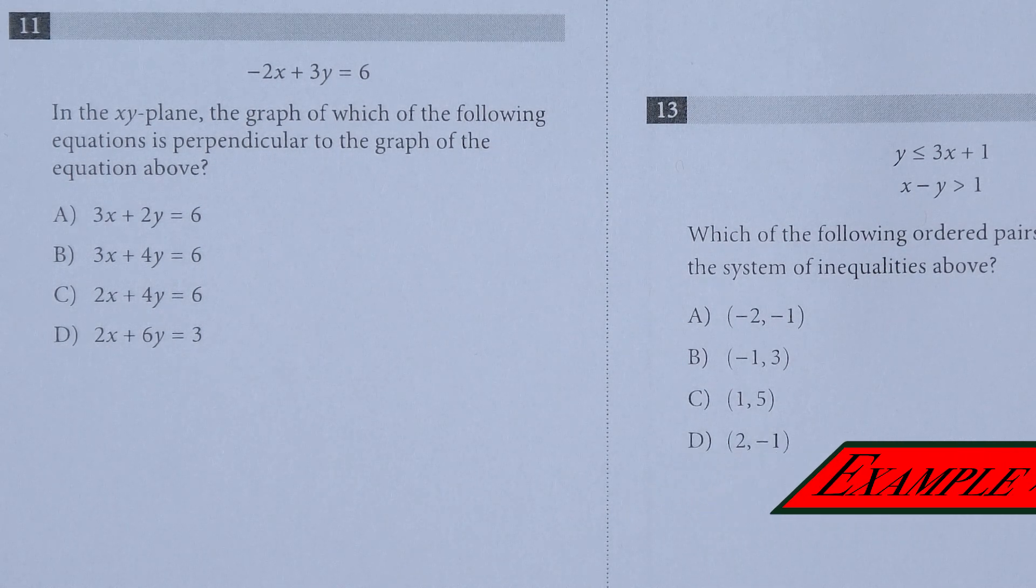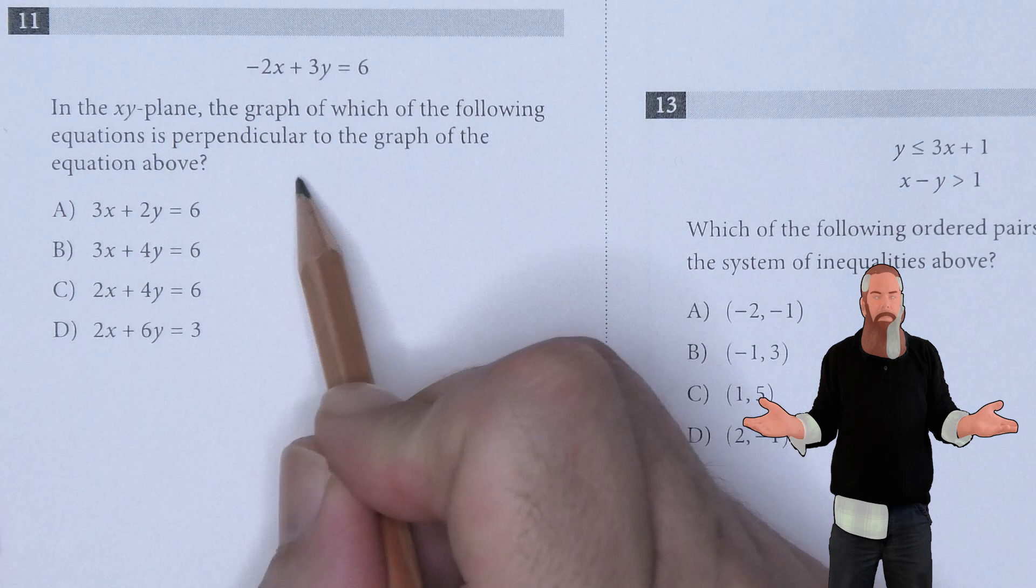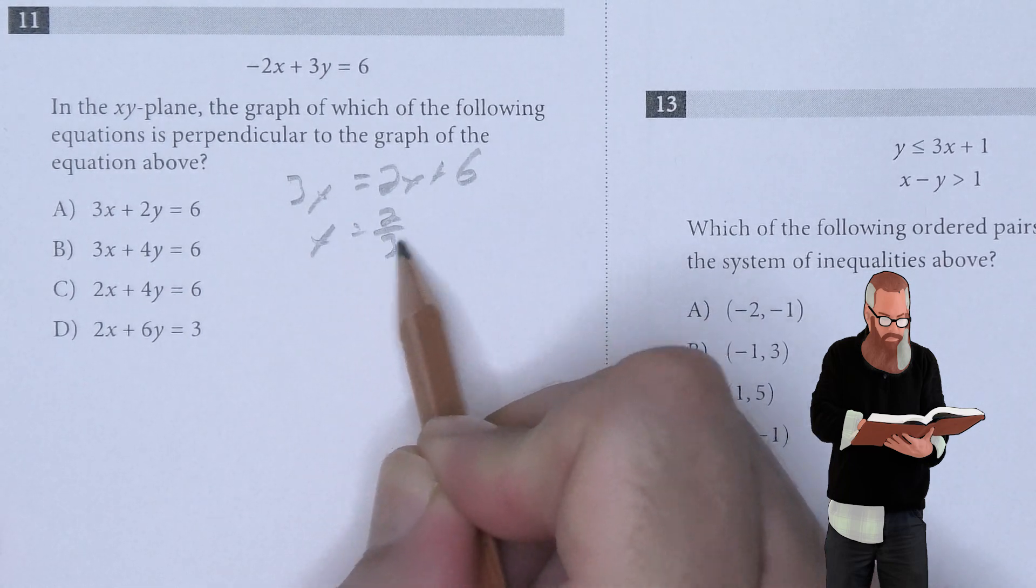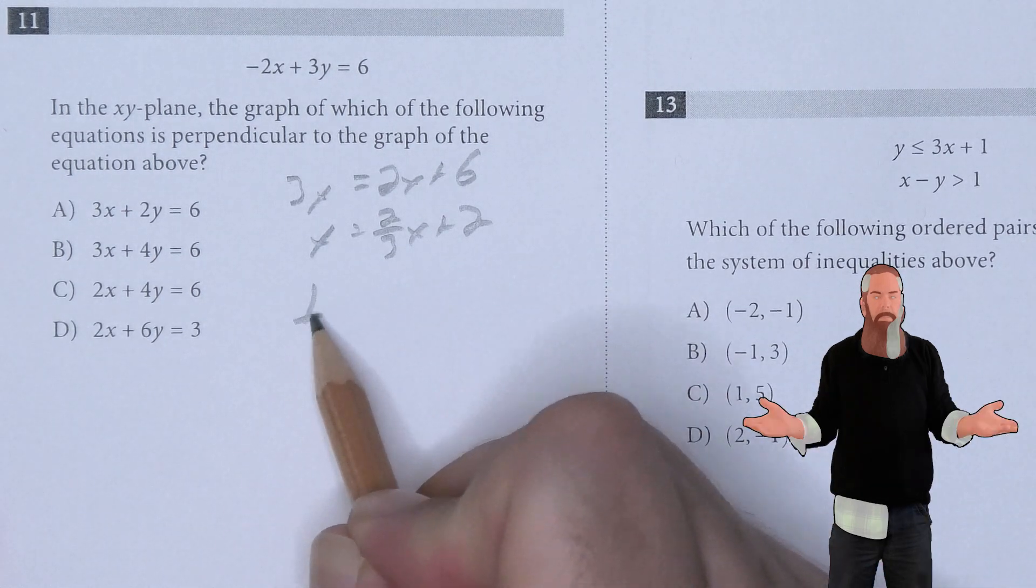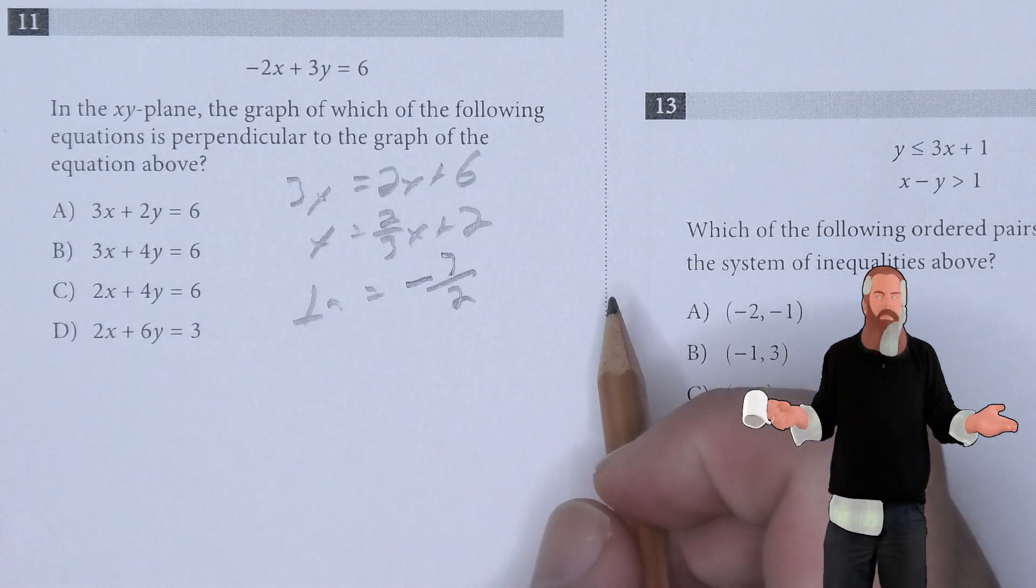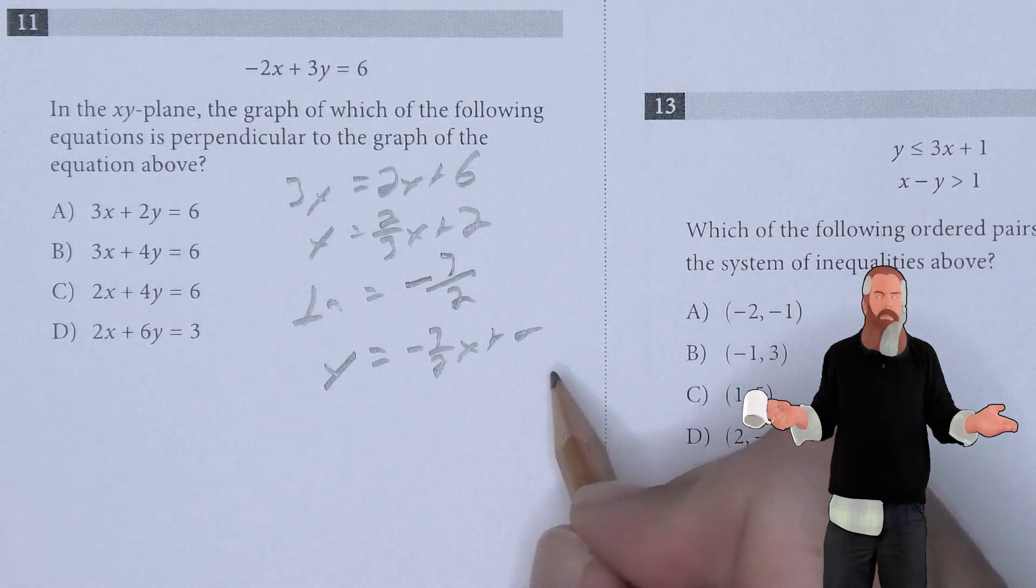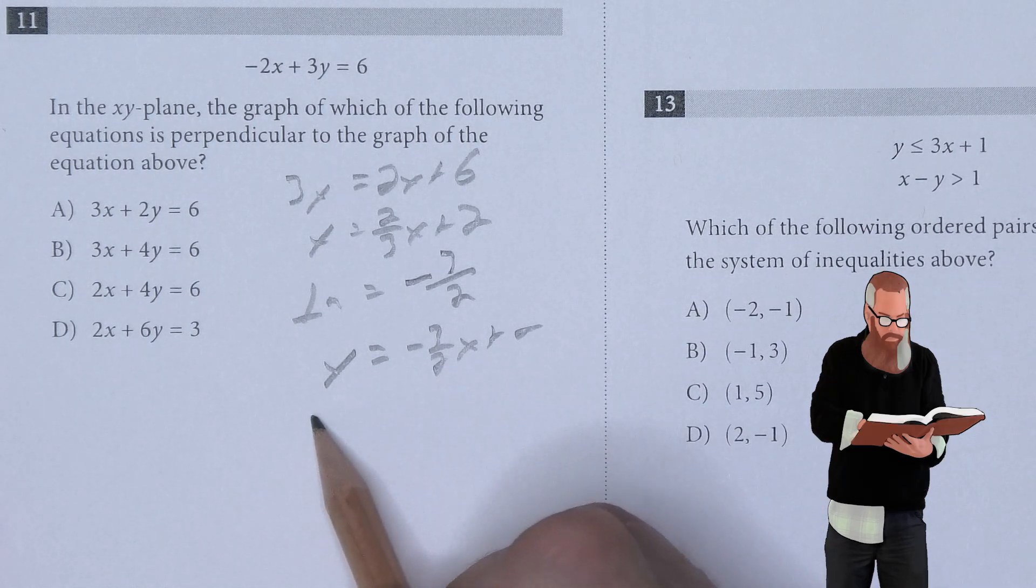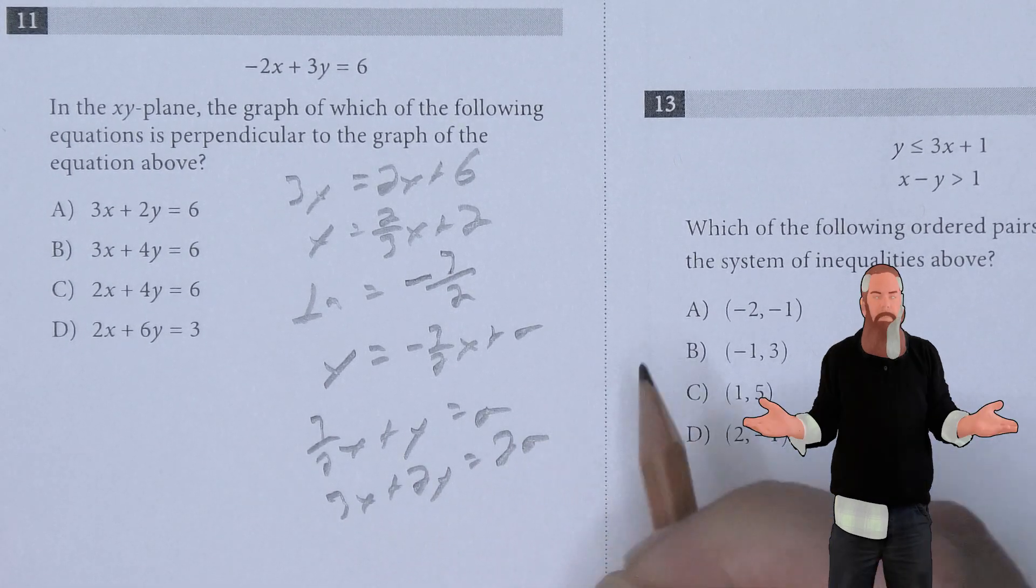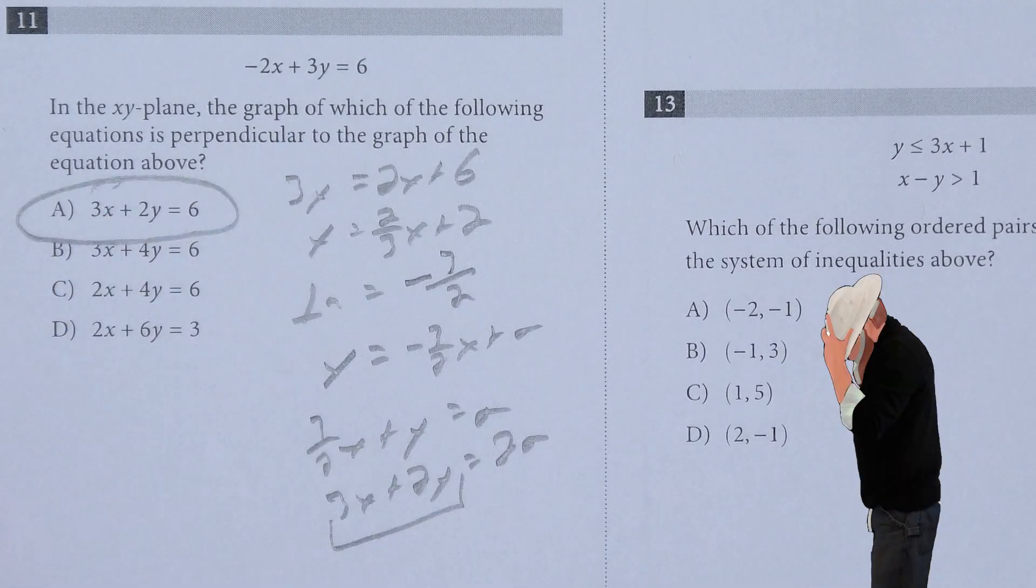In the XY plane, the graph of which equation is perpendicular to the graph of the equation above? Let's turn this first equation into Y = MX + B form. This means 3Y = 2X + 6, or Y = 2/3X + 2. A perpendicular slope is the opposite inverse, meaning I'm looking for -3/2. I need Y = -3/2X + some number. If I move the X to the other side, I get 3/2X + Y = A, which means 3X + 2Y = 2A. I'm paying attention to 3X + 2Y. The only 3X + 2Y I see is A, so A is the answer.